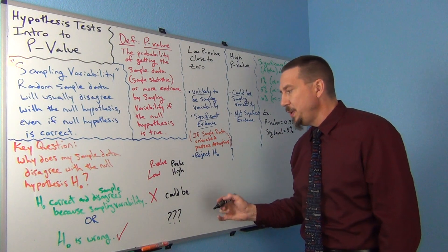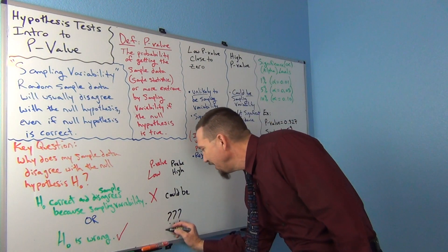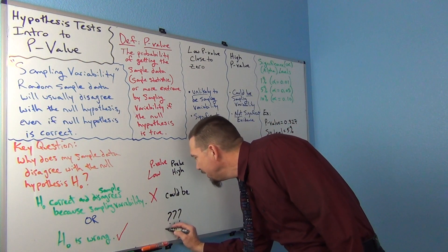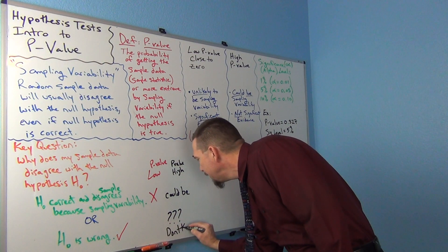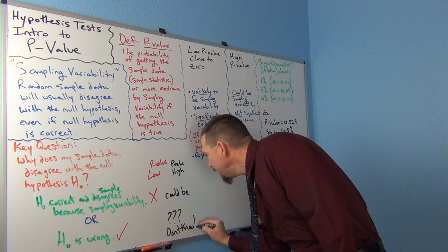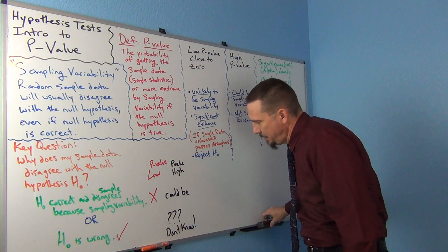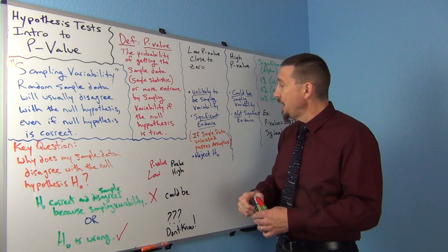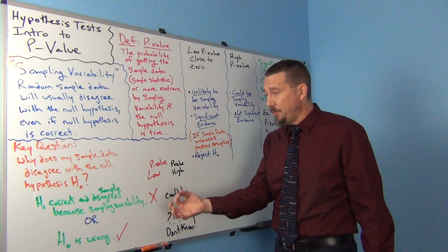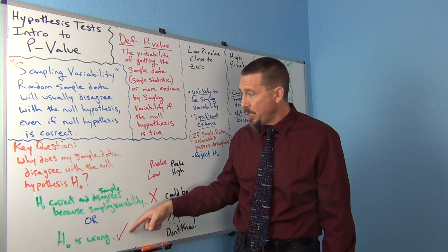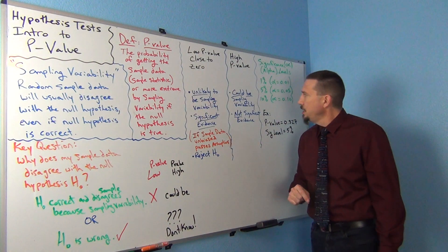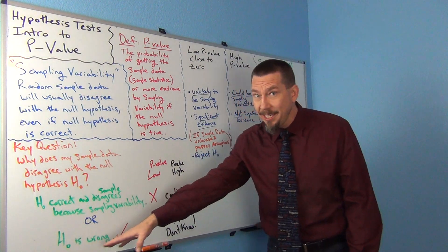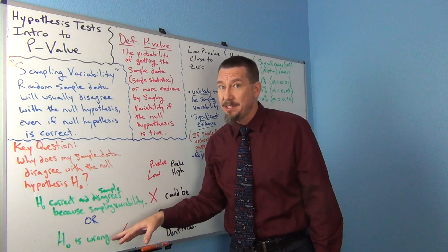So with a high p-value, we can't really answer the question. We can't know for sure which one we're dealing with. We don't know. This is why we're not a big fan of high p-values. High p-values mean sampling variability could be involved, which means we really don't know the answer. So we're not going to say that the null hypothesis is right. A high p-value does not guarantee that the null hypothesis is correct.